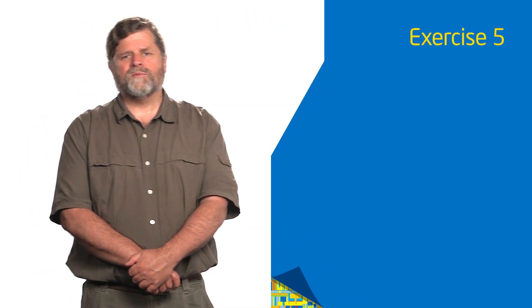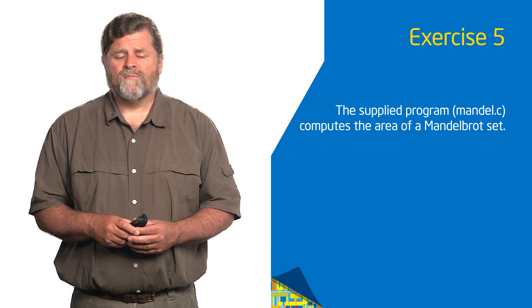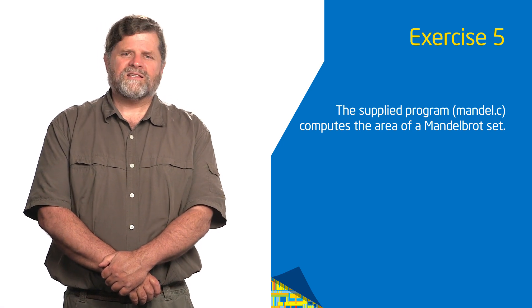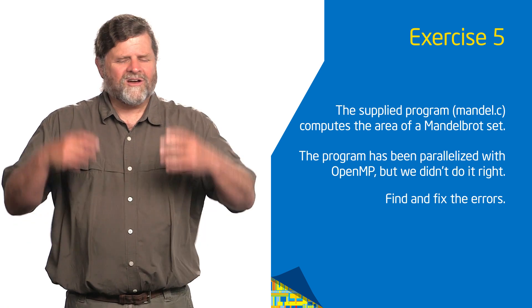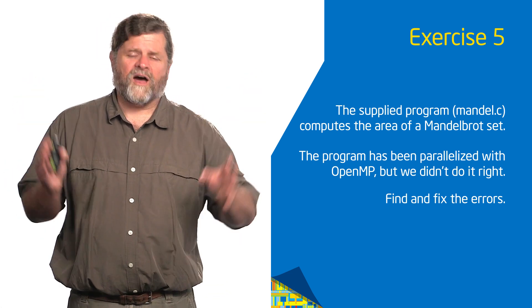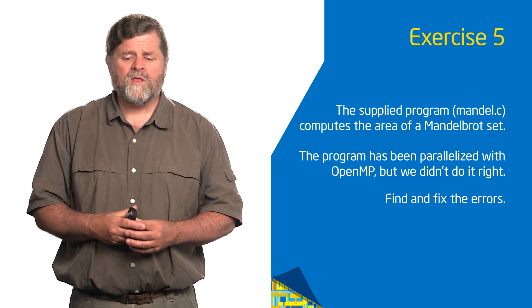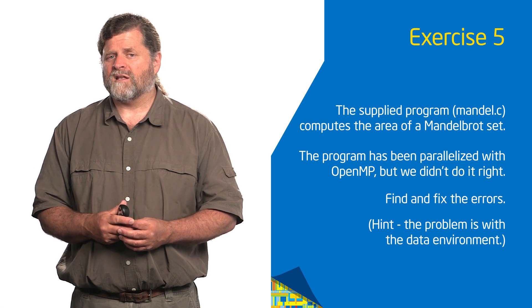Now we're going to move to an exercise. In the software provided with these lectures, there's a routine called mandel.c that computes the area of a Mandelbrot set. This is the standard thing we do in parallel computing education — I hand you a program and it's buggy, your task is to debug it. The comments in the code tell you the value should be approximately pi over 2, so you can tell when it's giving you the wrong answer. Find the code, run it, change the number of threads, run it several times. Then go in and fix it. There are multiple errors and they all have to do with the data environment. Think about how you'd optimize the program a little bit too.